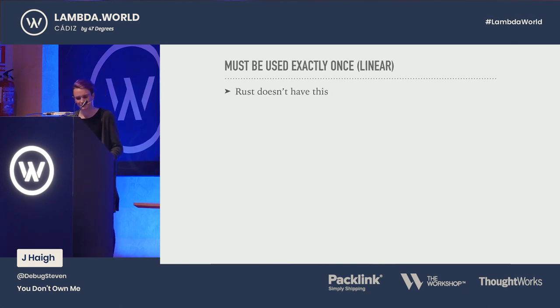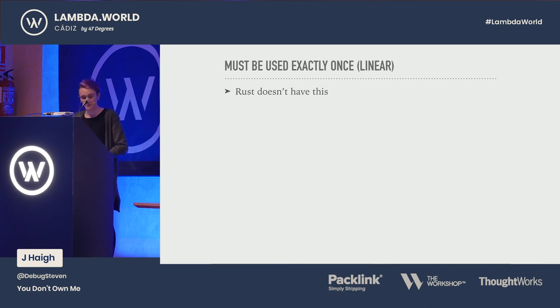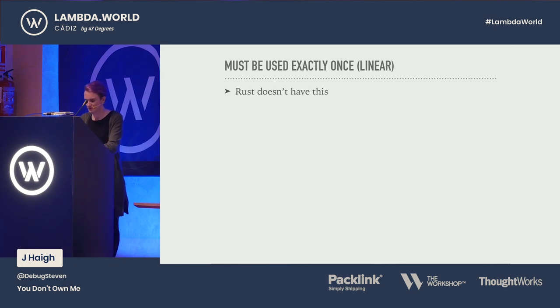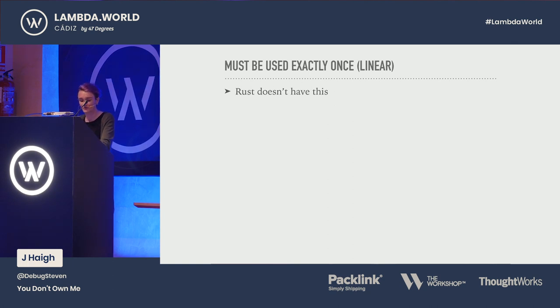Linear types — must be used exactly once — Rust doesn't actually support this type at all. People who really want this are looking for proper support of relevant types.